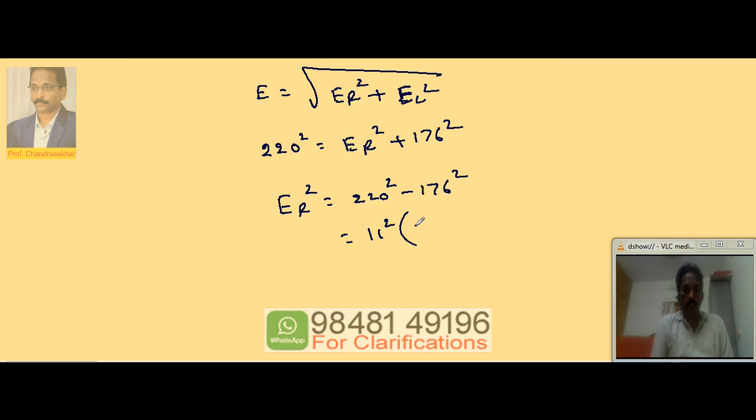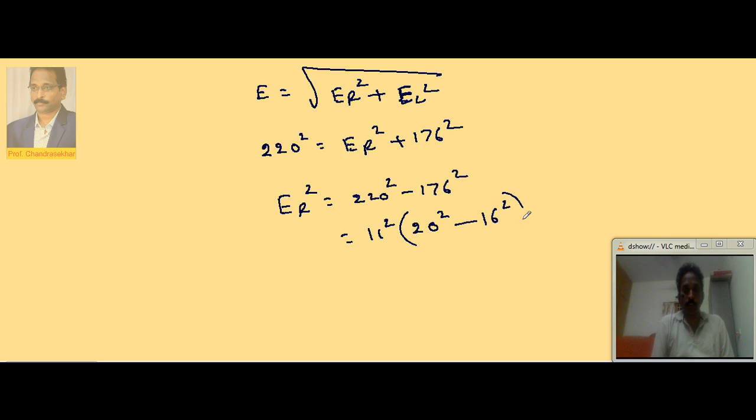11 squared I am taking out, remaining 20 squared. Here 11 into 16 is 176, so this can be taken as 16 squared. 11 into 20 is 220.